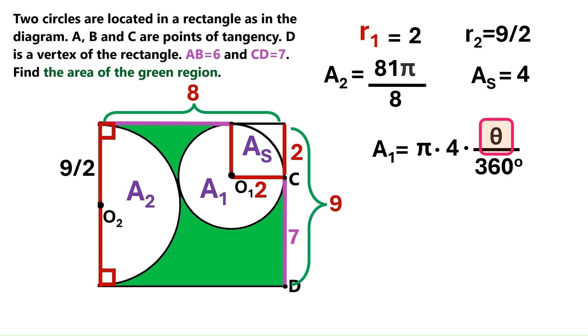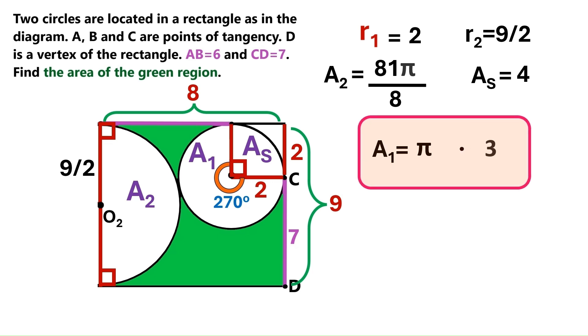Now, this theta is the sector's angle, and we can see it here. As you know, we've got a square here, so this angle is a 90 degree angle, which means this angle must be 270 degrees. Let's change this theta to that, and let's do the math. And we find that area 1 equals 3 pi.